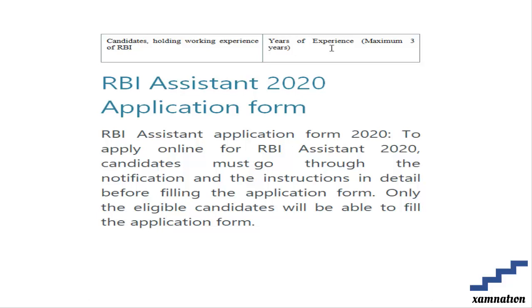For example, if a candidate has worked at RBI for two years, they get two years of relaxation, but it will not exceed three years. So even if a candidate has five years of experience, the maximum relaxation granted is three years.